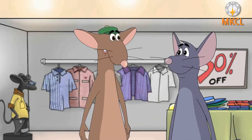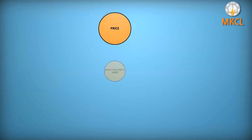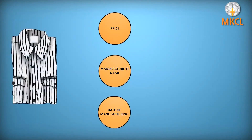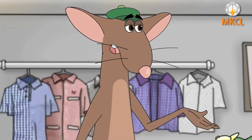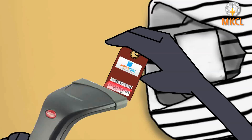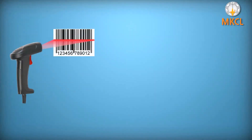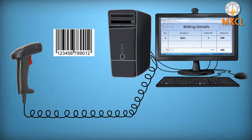Okay, but how does that tell you about the price of this shirt? The information like price, manufacturer's name, date of manufacturing, etc. about the shirt is already linked to the barcode on the computer. So he used that machine to read the code. What he used was the device called a barcode reader. It's a scanner which scans the code and recognizes it.